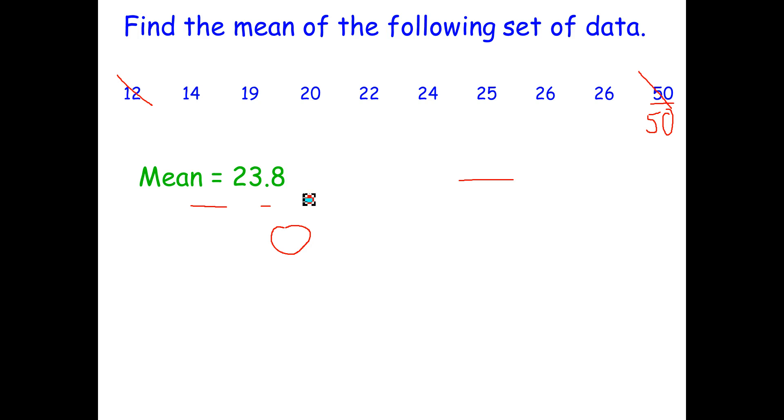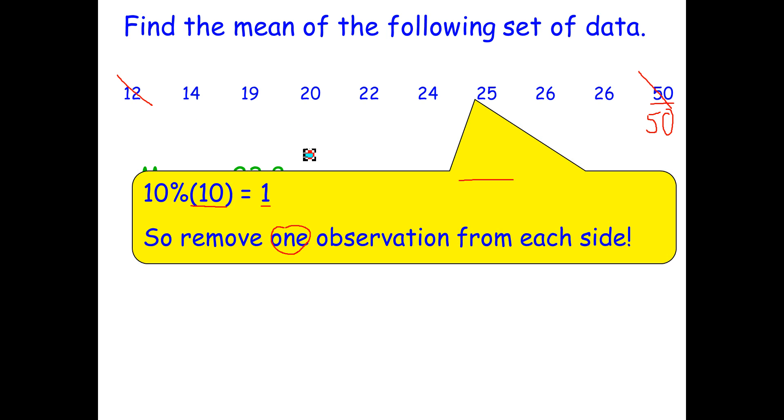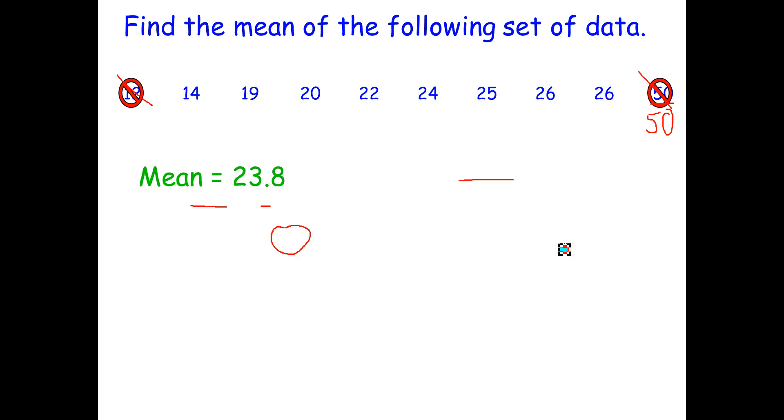Now we just calculated normal mean just for comparison. But if you want to find a percent trimmed, like a 10% trimmed mean, multiply your number of observations or number of data points by your percentage trimmed. And you'll get the number you need to remove from each side of the data set. From there you can just add up the remaining data points, divide by the number of points remaining just like you would a normal mean, and you'll get your new trimmed mean.